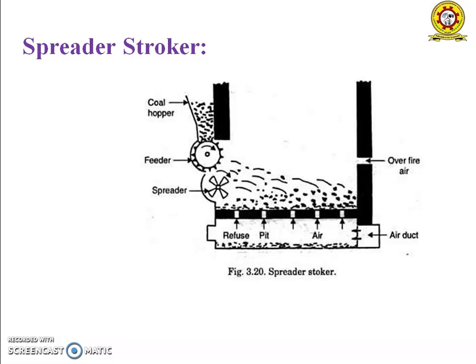The air is admitted from the underside of the grate, which is divided into several compartments each connected to an air duct. The grate must be saved from being overheated. For this, coal should have sufficient ash content which will form a layer on the grate. Non-caking coals are best suitable for the grate. The rate of burning with the stoker is 200 to 300 kg per meter square hour when forced draft is used.